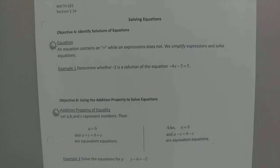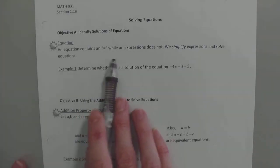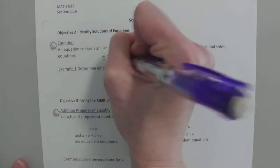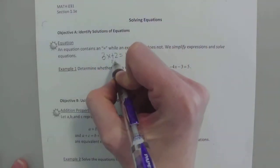The first thing I want to point out: an equation contains an equal sign while an expression does not. So for example, 3x plus 2 equals 6 is an equation.